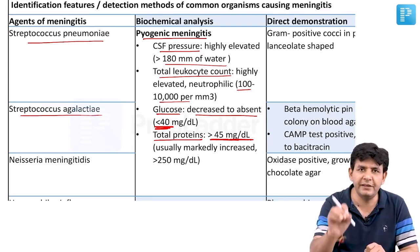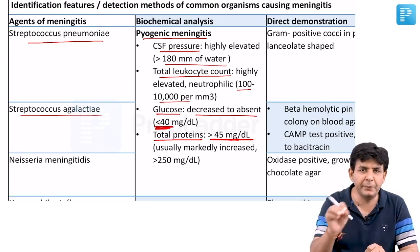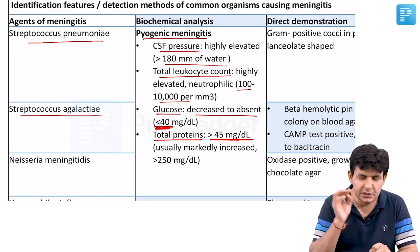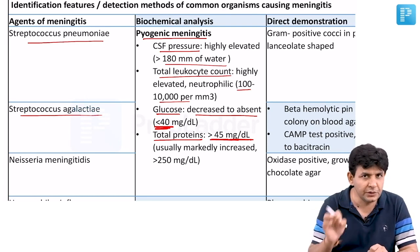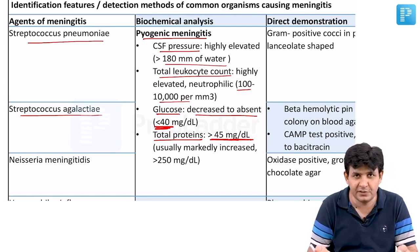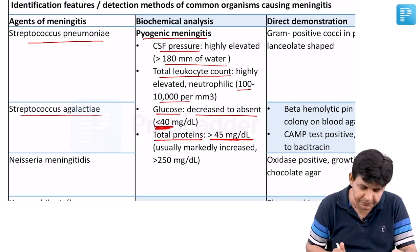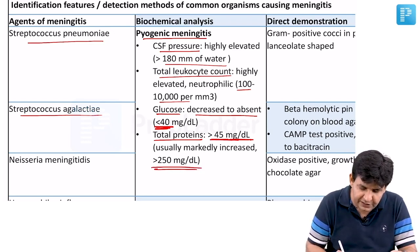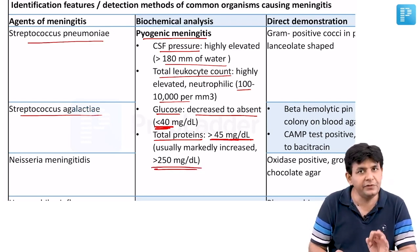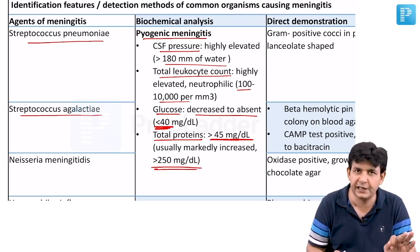Total proteins are elevated at more than 45 mg/dL. To remember: glucose is less than 40 and proteins are more than 45. The bacteria love glucose so they consume it, decreasing it significantly. Proteins can increase up to 250 mg/dL in pyogenic meningitis.